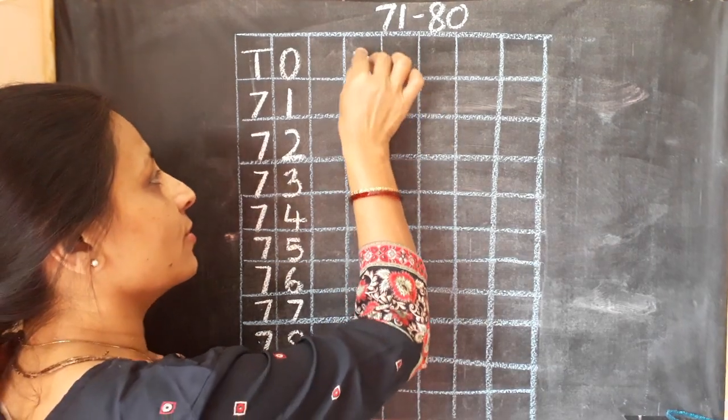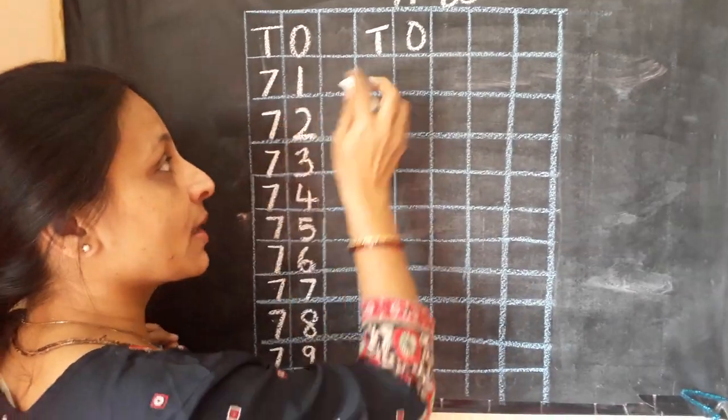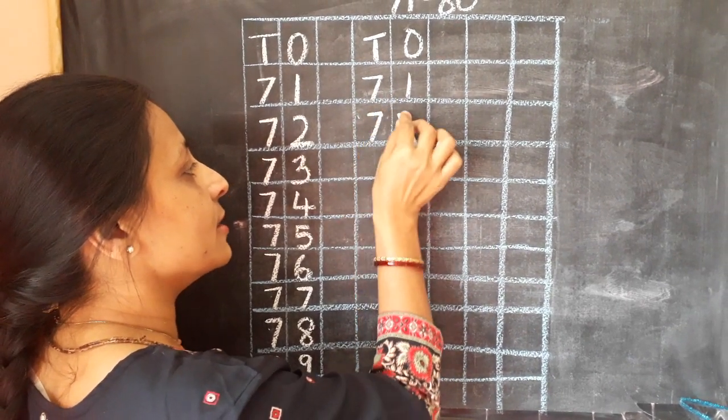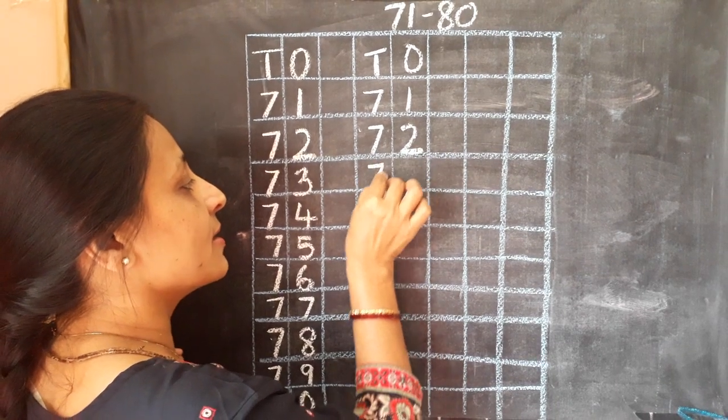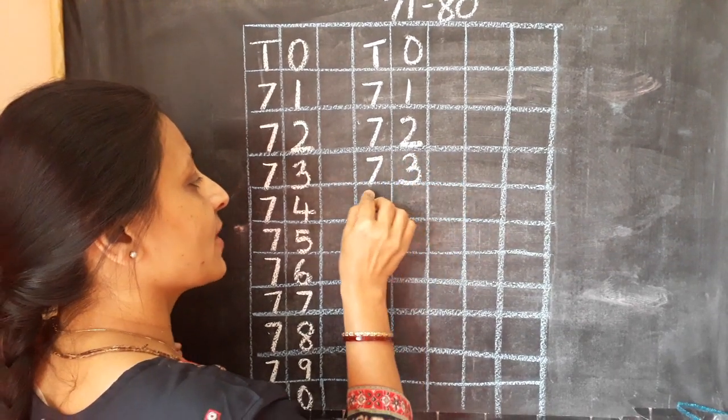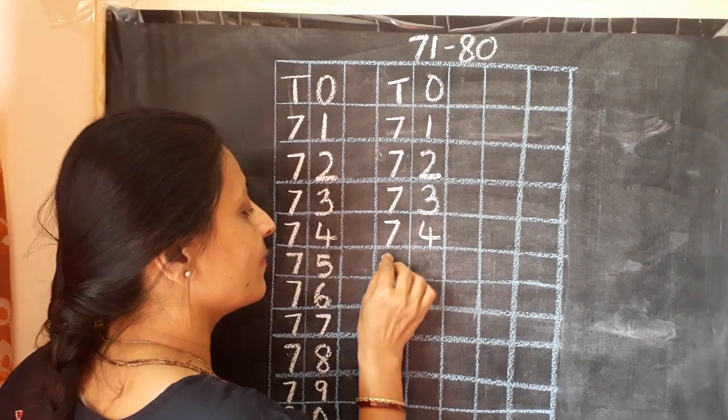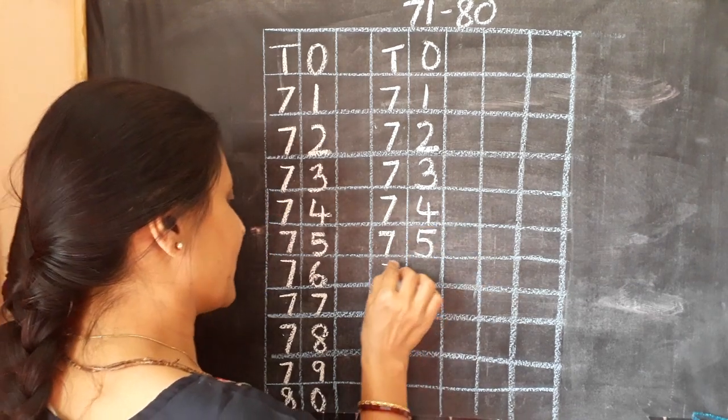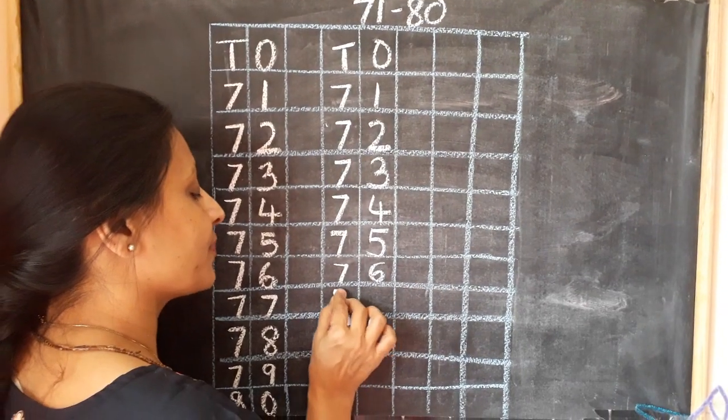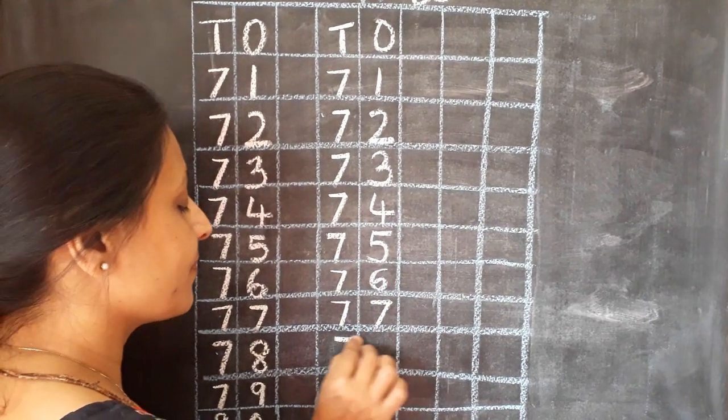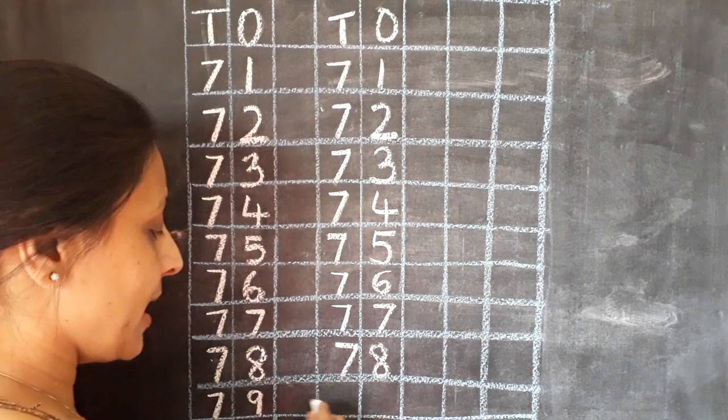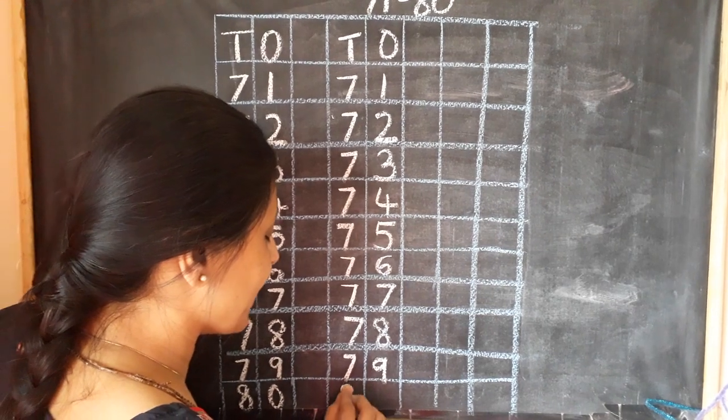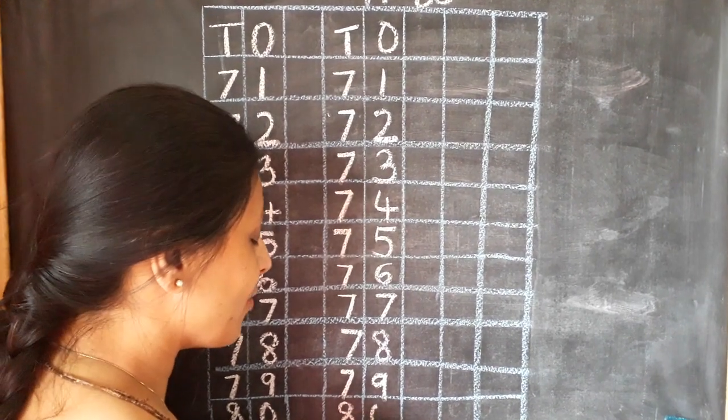Once again, I will show you. We are going to write under T and O box: 71, 72, 73, 74, 75, 76, 77, 78, 79. And what comes after 79? 80.